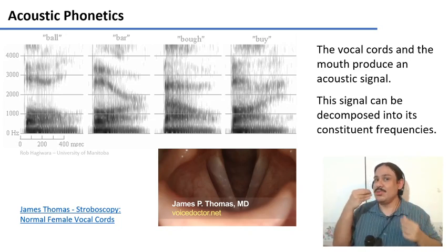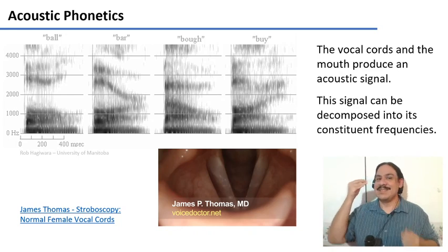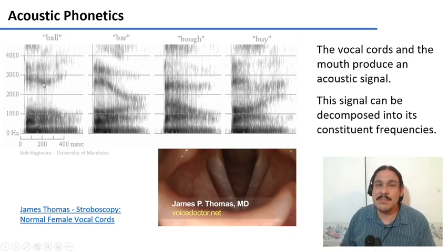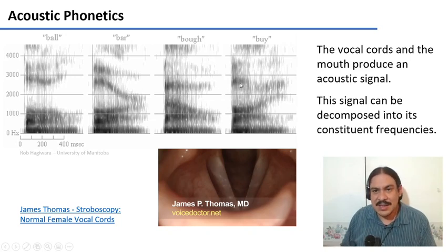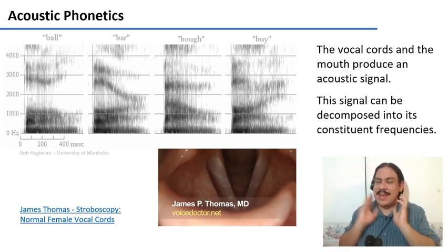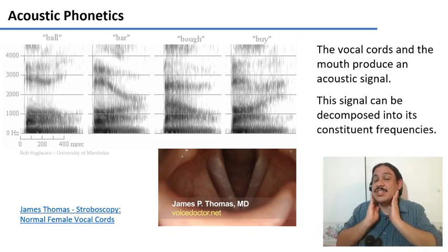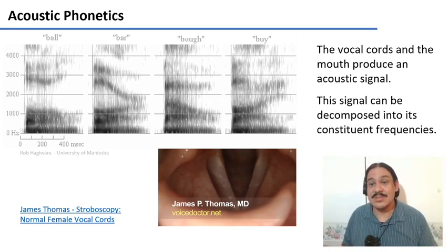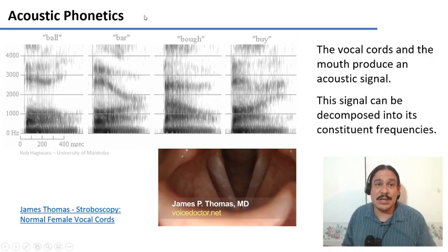That air signal is going to travel out and then hit someone's ears. We can decompose that signal into its constituent frequencies. This is something called a spectrogram. As you can see, every human sound has a slightly distinct imprint in its frequencies. So our lips, our tongue, and every part of our mouth changes the shape of the sound. And that's how we produce our human sounds. And by the way, the study of the frequencies is acoustic phonetics.